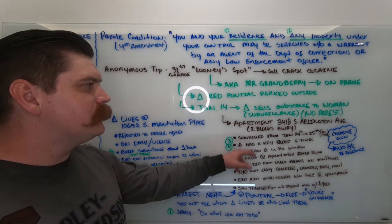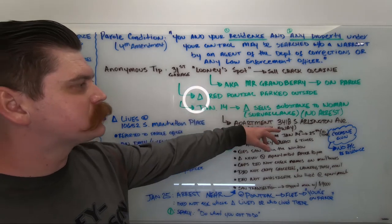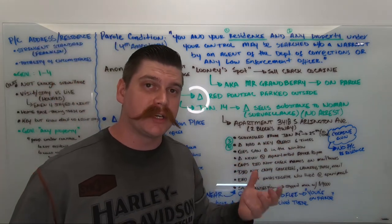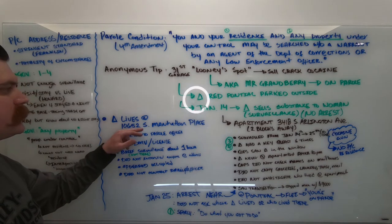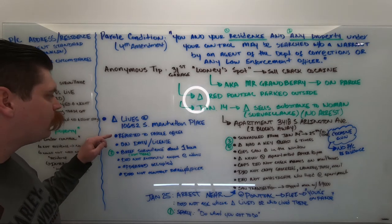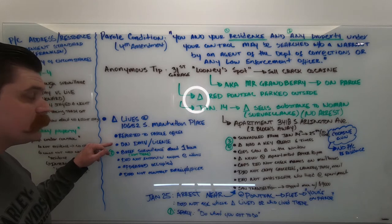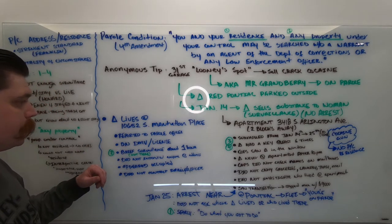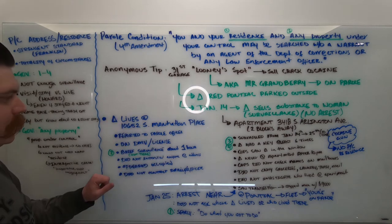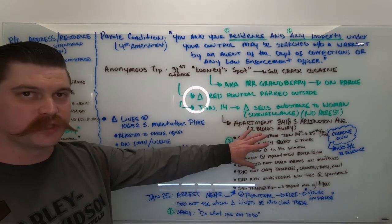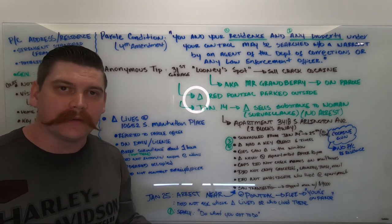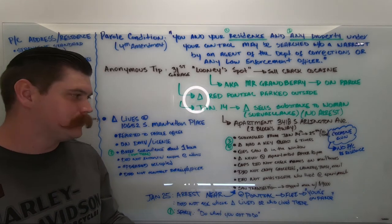When I said that they never investigated whether Mr. Granbury actually lived at Arlington Avenue, the reason why I mentioned that is because the cops actually knew where Mr. Granbury lived. He lived at 10652 South Manhattan Place. How do they know this? They knew that because that's the address he reported to the parole officer. It is also the address that was on his driver's license and registered with the DMV. In order to check where Mr. Granbury lived, the officers also surveilled this spot. But instead of doing all of this surveillance like they did here for so many days, instead they went to Manhattan Place for only one hour. What did they see there? Well, nothing. They didn't see Mr. Granbury at this apartment, so they just assumed he didn't live there.